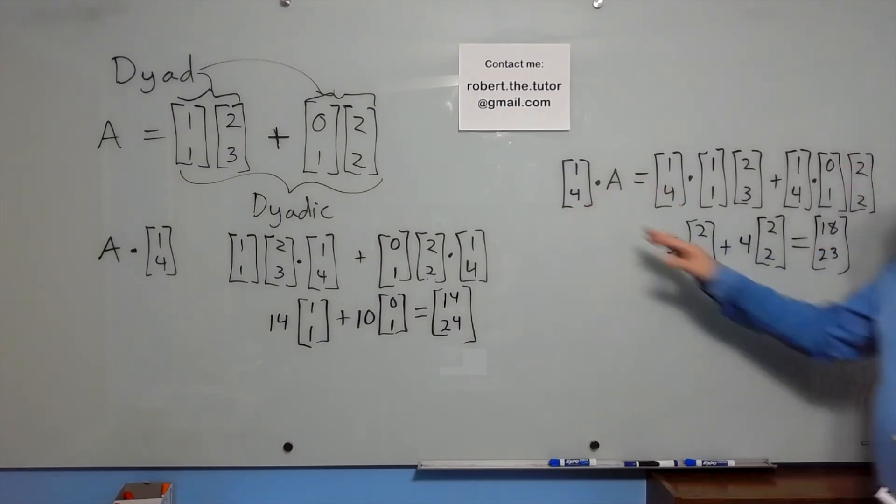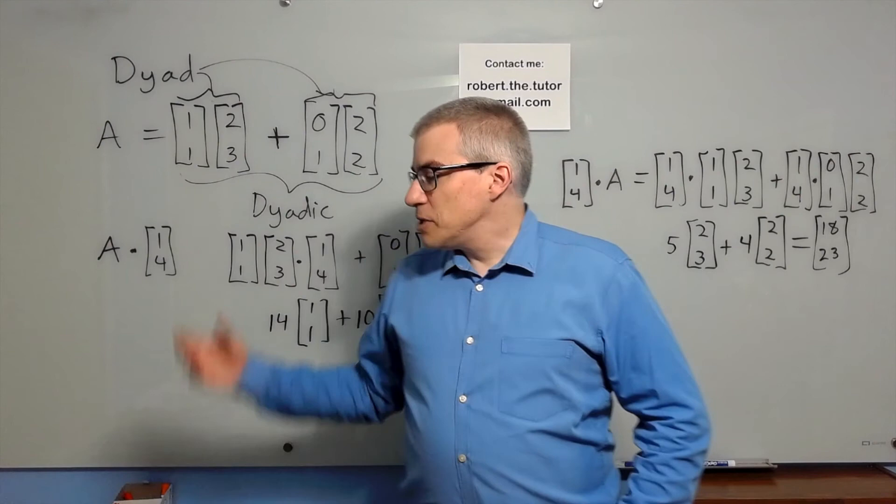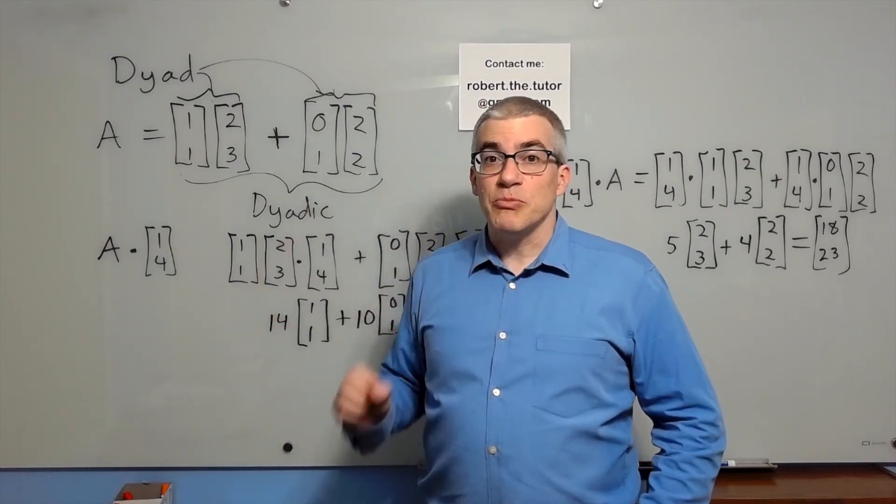So a vector dotted with a dyadic gives a vector. You can even take a dyadic and do two dot products and end up with a scalar, a number.